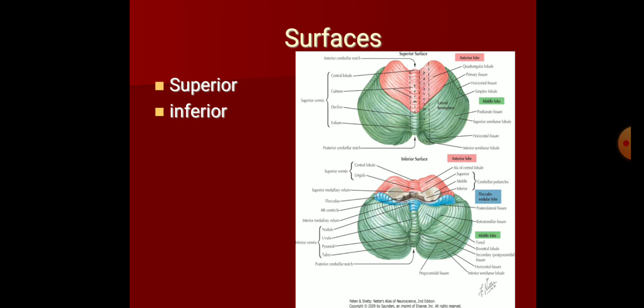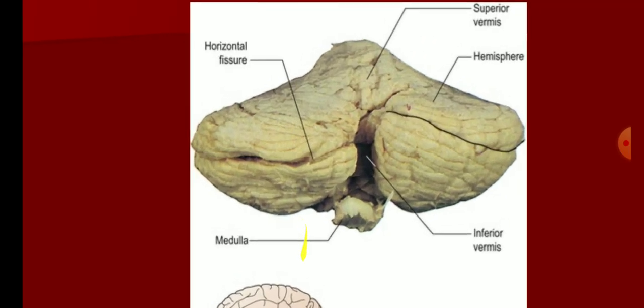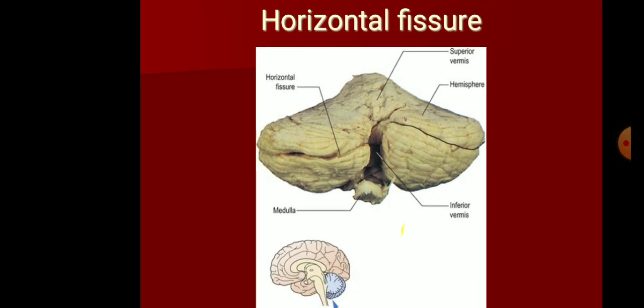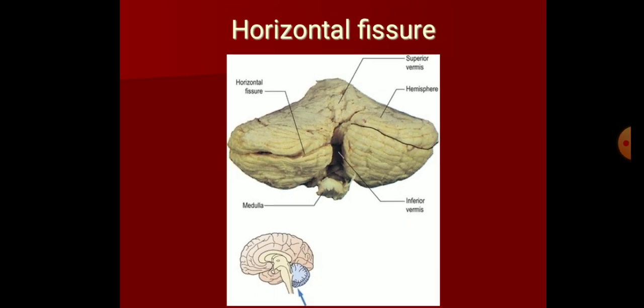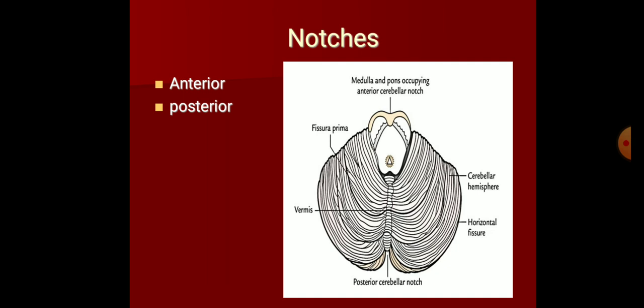The cerebellum has two surfaces: a superior surface and an inferior surface. The fissure that divides the cerebellum into superior and inferior surfaces is the horizontal fissure. On the inferior surface, you can appreciate the inferior vermis lying in the depression called the vallecula.